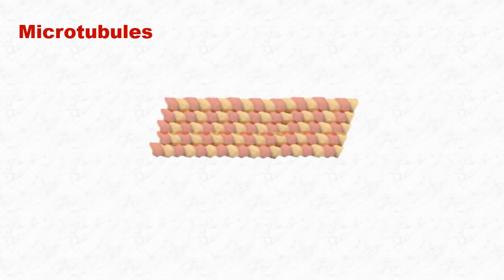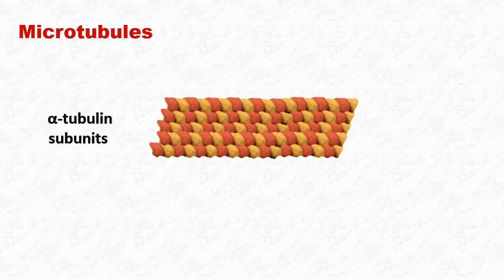The arrangement of the 13 protofilaments in a microtubule is such that one end of this microtubule is terminated by a row of alpha-tubulin subunits, and the opposite end is terminated by a row of beta-tubulin subunits. The end of microtubule having beta-tubulin subunits is known as the plus end. And the other end having alpha-tubulin subunits is called the minus end.